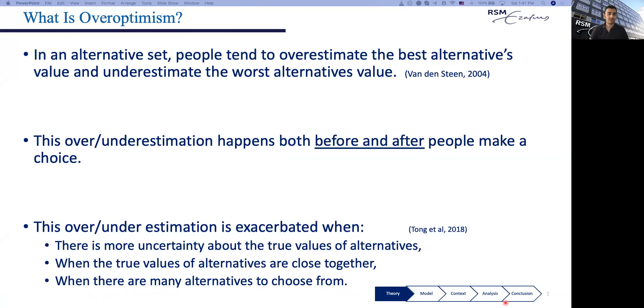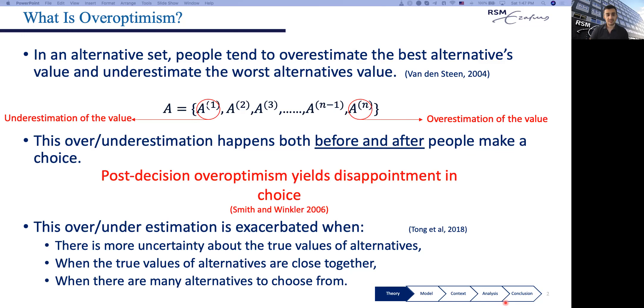Let's have a brief overview on overoptimism. It has been shown that in an alternative set, people tend to overestimate the best alternative's value and underestimate the worst one's value. This over and underestimation happens both before and after people make a choice. When people choose the best alternative from a set because they have already overestimated its value, they will usually feel disappointment after the true value is revealed. This is cited as the optimizer's curse.